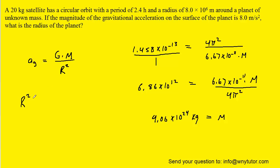We could multiply both sides of the equation by r squared. We could then divide by the acceleration due to gravity and take the square root.